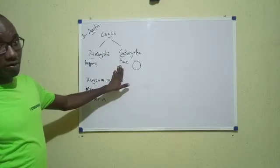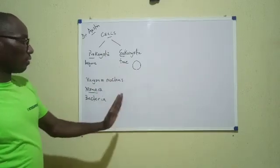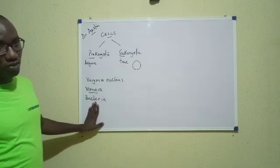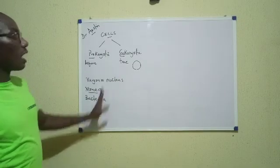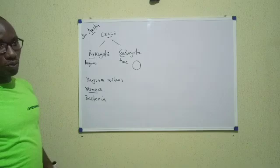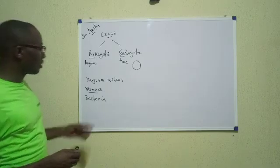Now which organisms are eukaryotic? All other organisms apart from the bacteria, apart from the Monerans are classified as eukaryotic.